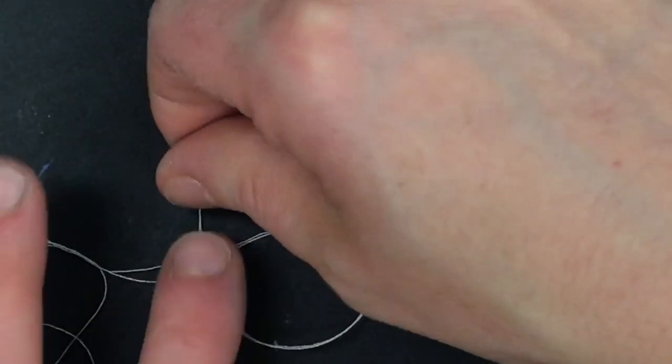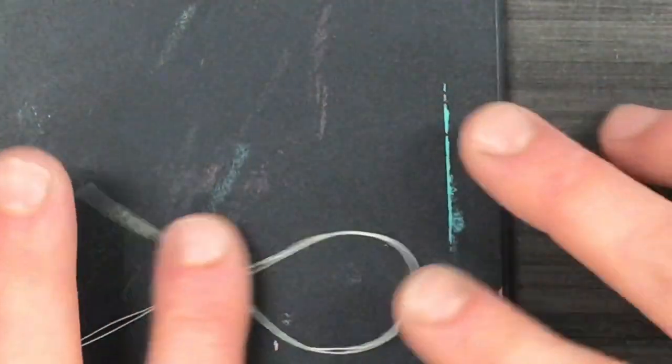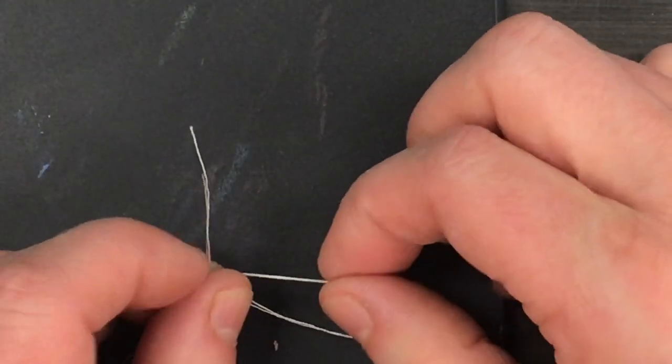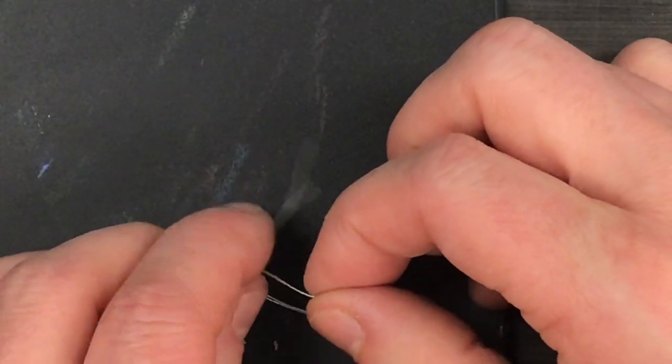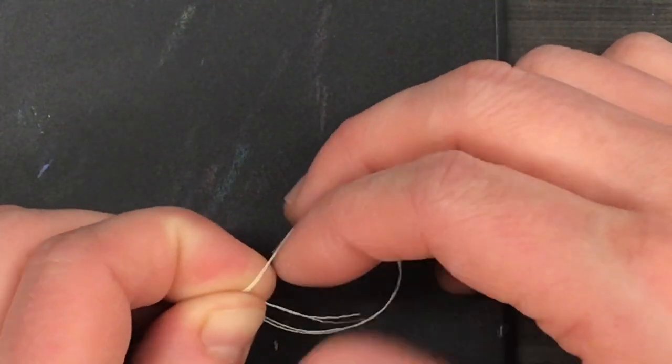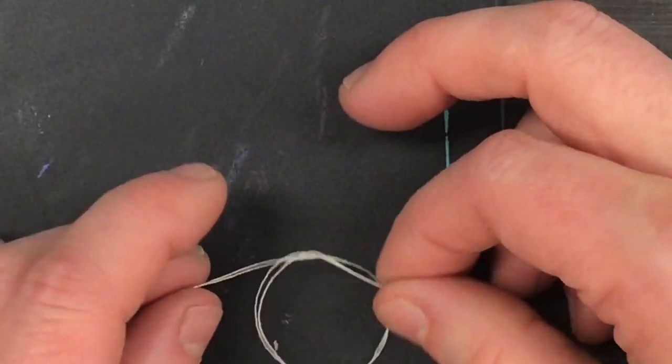I loop over so that my end looks like a fish. My end is on top. So what I'm going to do is loop my end under and through the loop of my fish.